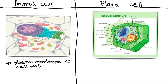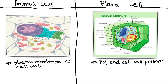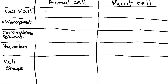Plant cells, on the other hand, have a plasma membrane — abbreviated PM — shown here in yellow, and a cell wall shown in green. Going back to our table: animal cells don't have a cell wall, and plant cells do.